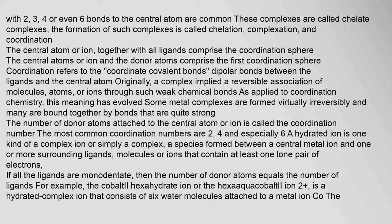Ligands with two, three, four, or even six bonds to the central atom are common. These complexes are called chelate complexes; the formation of such complexes is called chelation, complexation, and coordination. The central atom or ion, together with all ligands, comprises the coordination sphere. Coordination refers to the coordinate covalent bonds — dipolar bonds — between the ligands and the central atom. Originally, a complex implied a reversible association of molecules, atoms, or ions through weak chemical bonds.